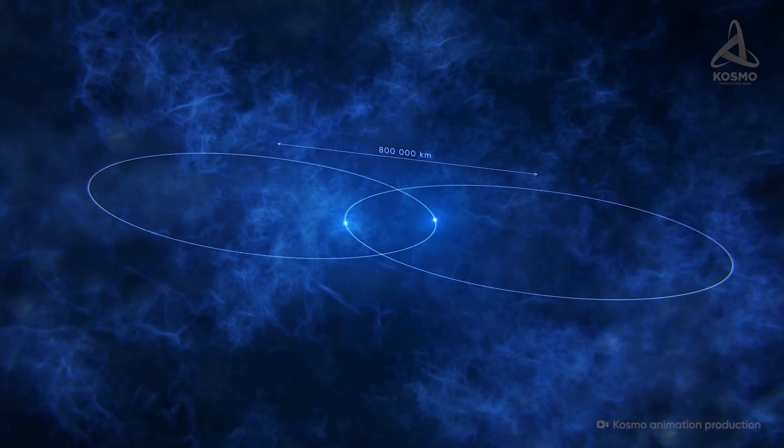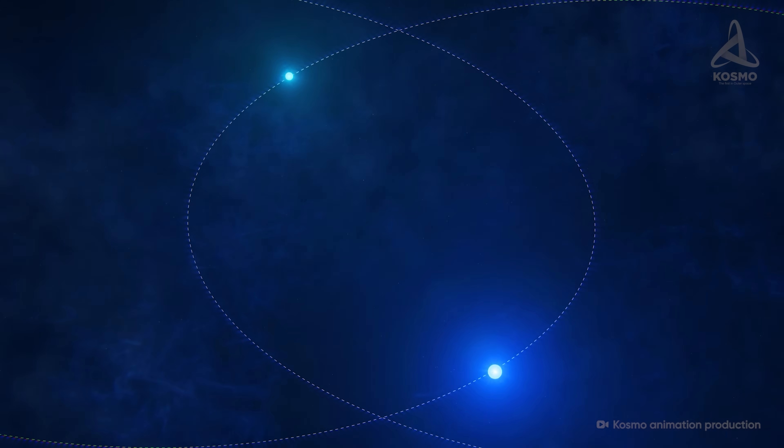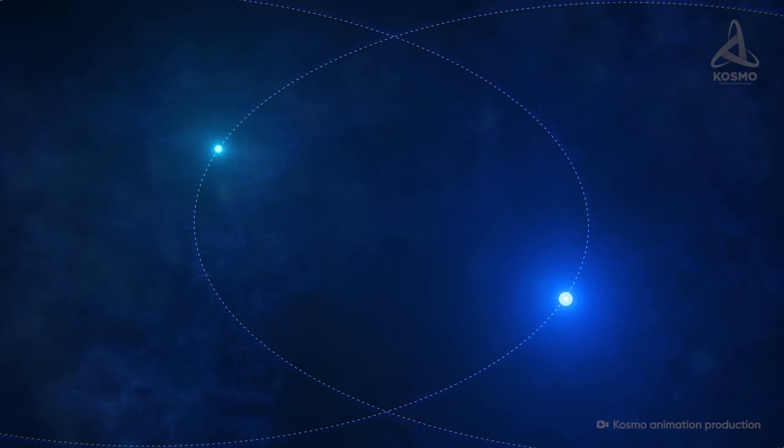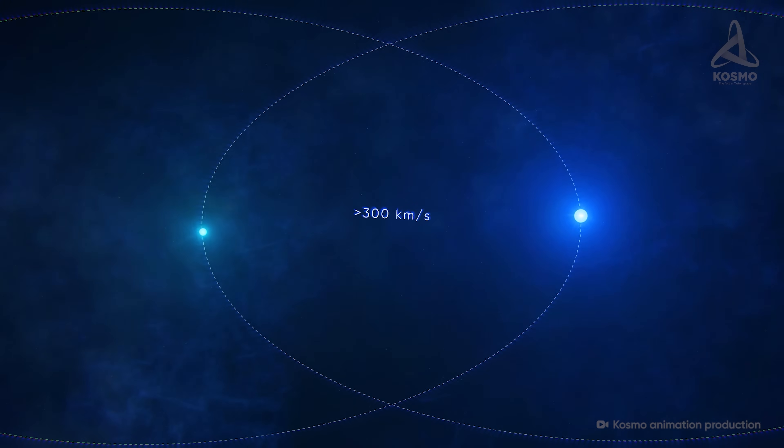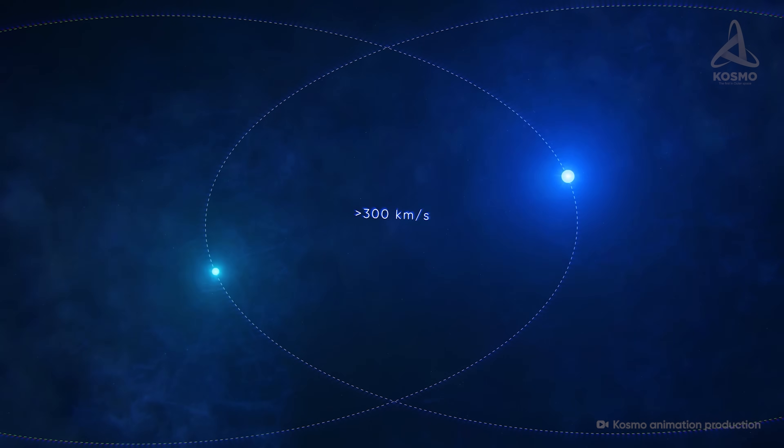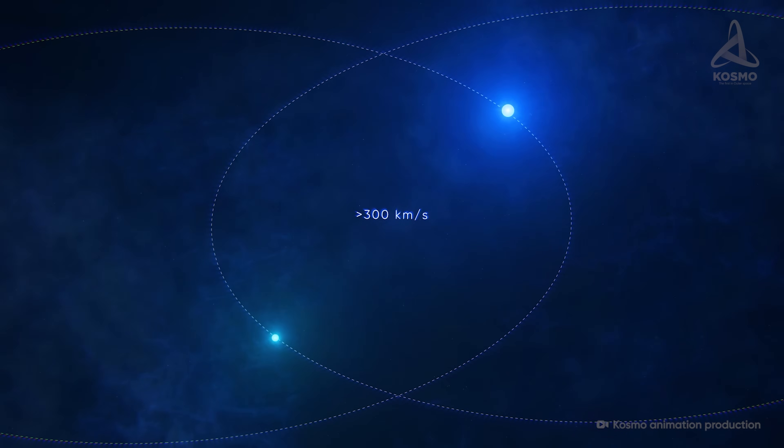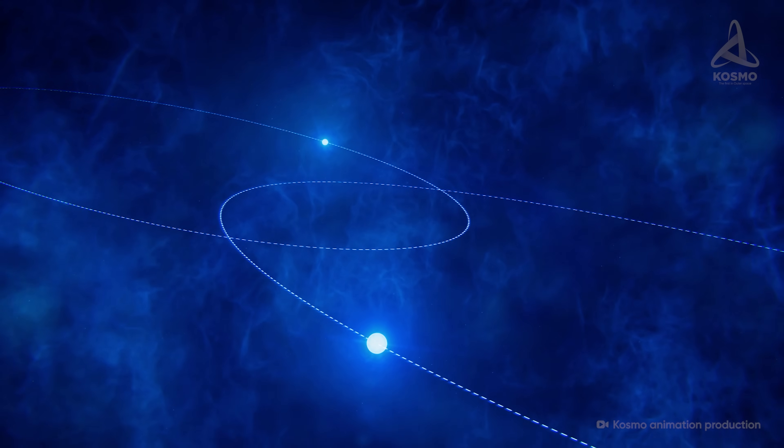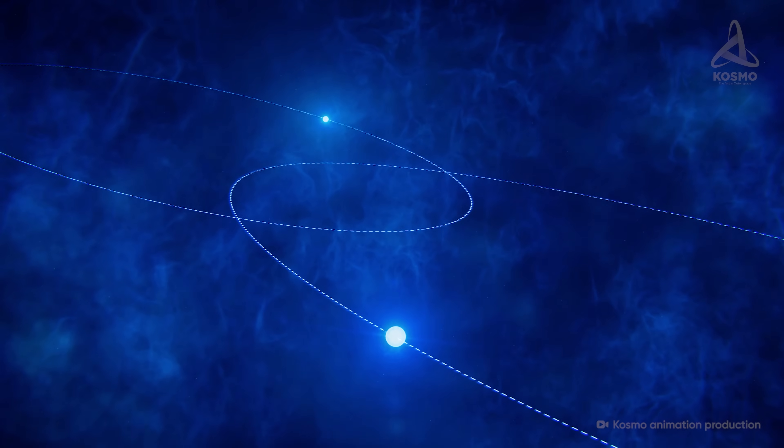Because of this small distance, the speed of mutual motion of both objects is very high. It exceeds 300 kilometers per second, so the pulsars make a complete revolution around a common mass center in just 2.45 hours. Such rapid motion causes a number of unusual phenomena due to the effects accounted for by the theory of relativity.